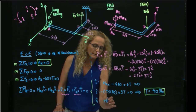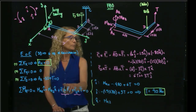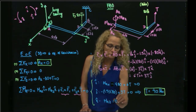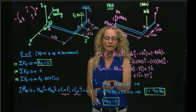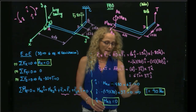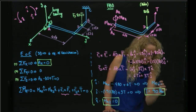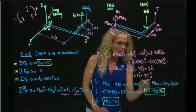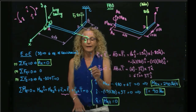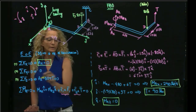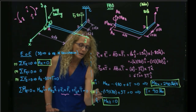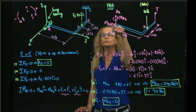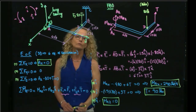For the k component, I have MAz and no other k components from either cross product, so MAz equals zero. Plugging the value T equals 40 pounds into the i equation, the moment MAx equals negative 240 pound-feet. With six equations we were able to find all reactions at support A. This is the complete solution of the problem.